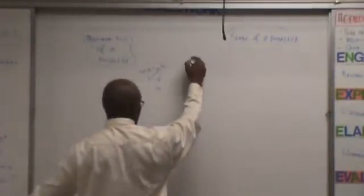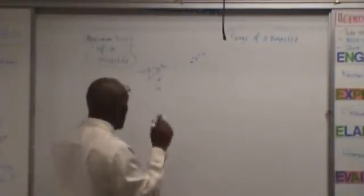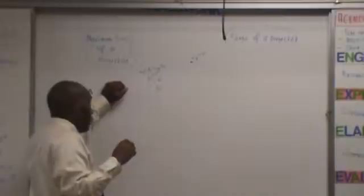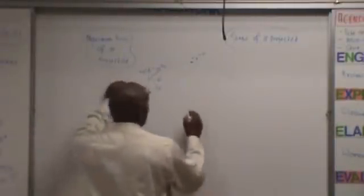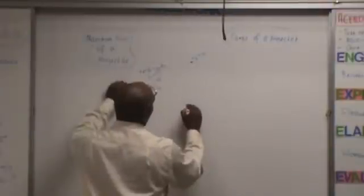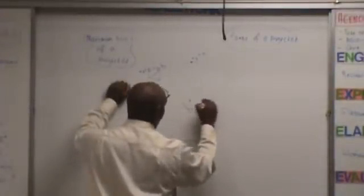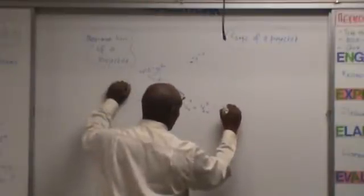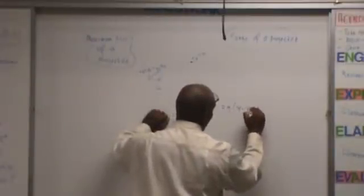If you want to calculate the maximum height, remember this: that dY equals zero — don't forget that — when you want to calculate the maximum height. What we've been using so far: dY is equal to V₀Y squared minus 2G times (Y minus Y₀).